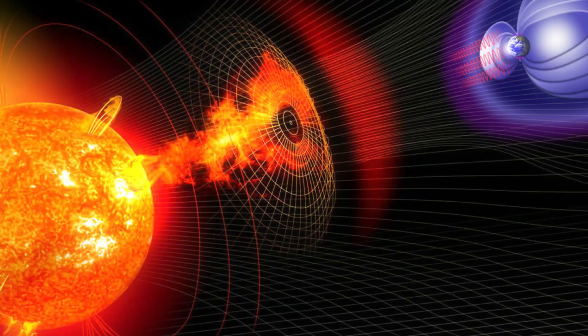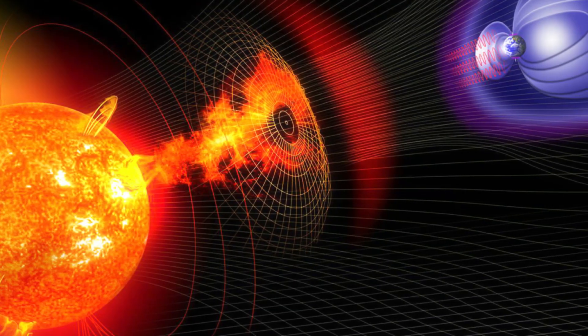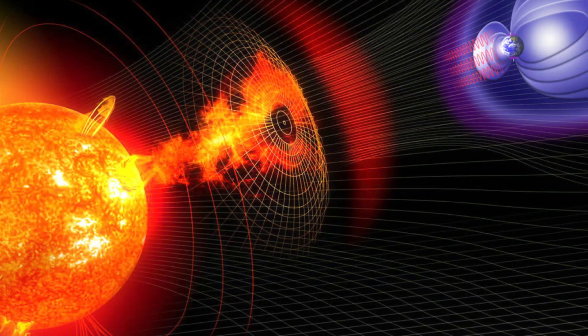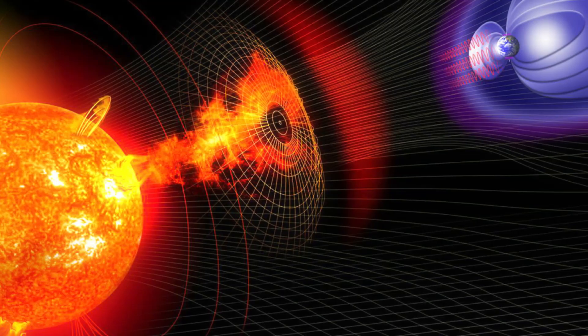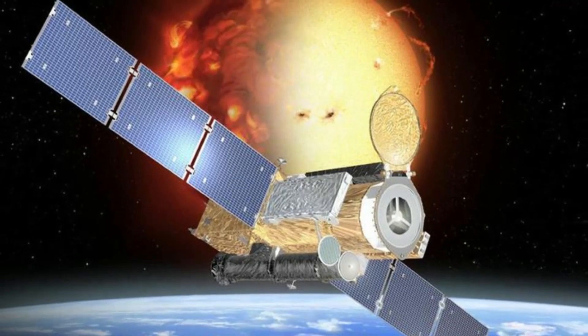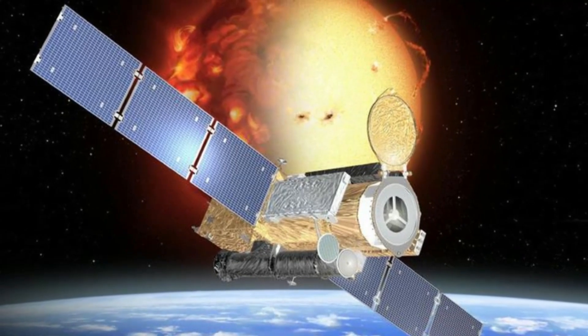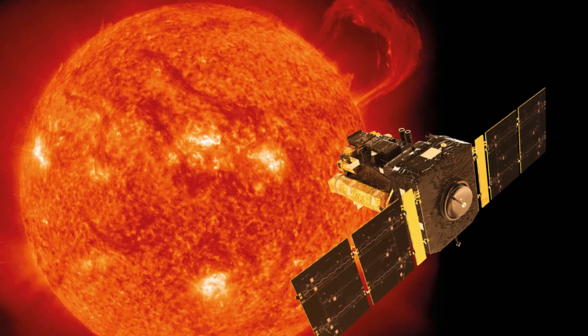When a halo is observed, that means it is Earth-directed. A halo CME occurs when the emitted gas is directed along the line of sight towards the observer — in this case, the SOHO satellite.